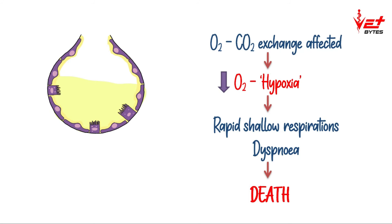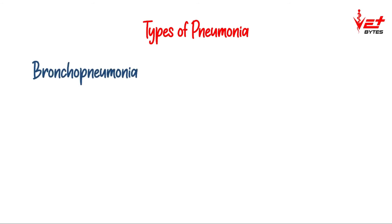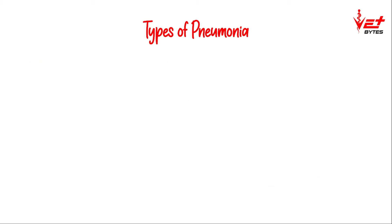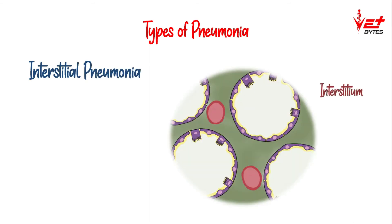Based on the part of the lung that is affected, pneumonia can be categorized into many types. The first one is bronchopneumonia, where inflammation starts from the bronchi and spreads to the bronchioles and to the alveoli. This is more commonly seen in animals. The next one is interstitial pneumonia, in which the inter-alveolar tissues are highly affected.